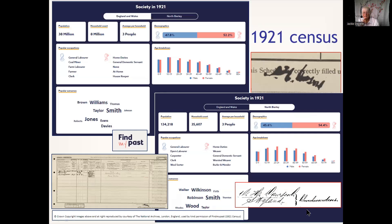Looking at the 1921 census, we've automatically got some demographics available, kindly provided by FindMyPast - a comparison between England and Wales and the local area in ages, occupations, and also surnames. I also wanted to pop in signatures, which is one of my favourite things. This person is quite old - we know from his little obituary announcement his eyesight was failing - and you can see the different signature in 1921 compared to when he was a churchwarden.